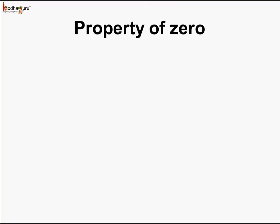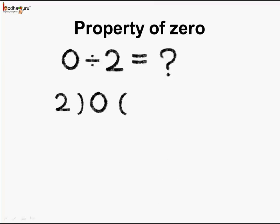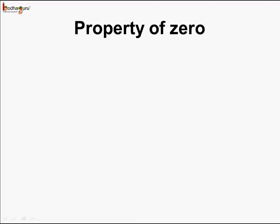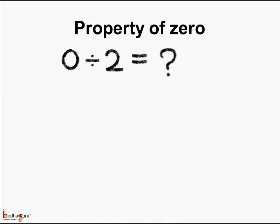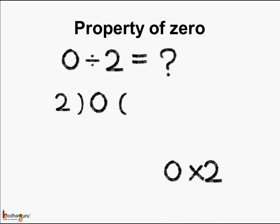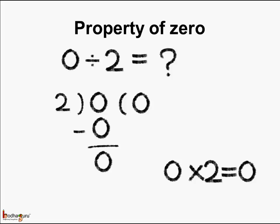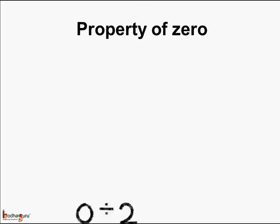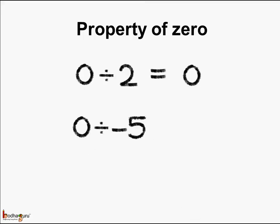Now coming to the property of 0: 0 divided by 2 is equal to what number? We know 0 times 2 is equal to 0, so 0 divided by 2 equals 0. Similarly, 0 divided by minus 5, which is a negative number, is also equal to 0.